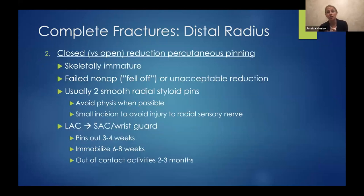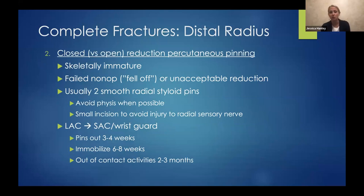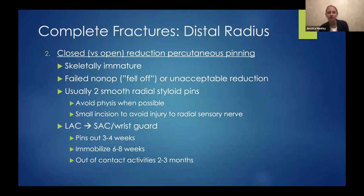For closed reduction percutaneous pinning, these are for more skeletally immature patients or those who fail non-operative treatment or have unacceptable reduction. Usually using two smooth radial styloid pins, sometimes one or three, trying to avoid the physis when possible. Always think about the radial sensory nerve and avoid wrapping it up in your K-wires. Usually place in a long-arm cast, then transition to a short-arm cast or wrist guard.